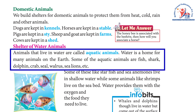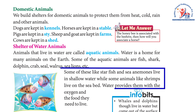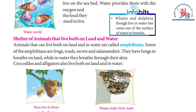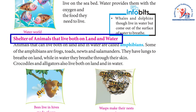Shelter of water animals. Animals that live in water are called aquatic animals — water is home for many animals on Earth. Some aquatic animals include fish, shark, dolphin, crab, seal, walrus, and sea lions. Some, like starfish, live in shallow water, while others like shrimps live on the sea bed. Water provides them with the oxygen and food they need to live. Whales and dolphins live in water but come to the surface to breathe.